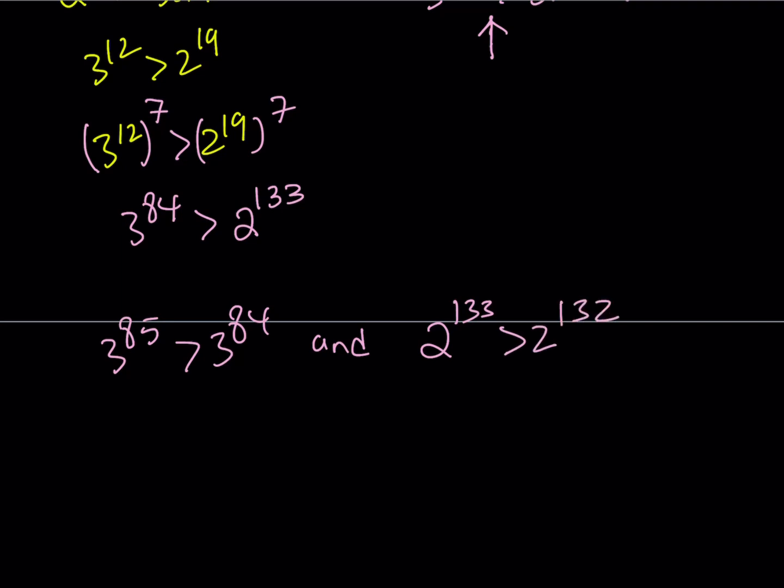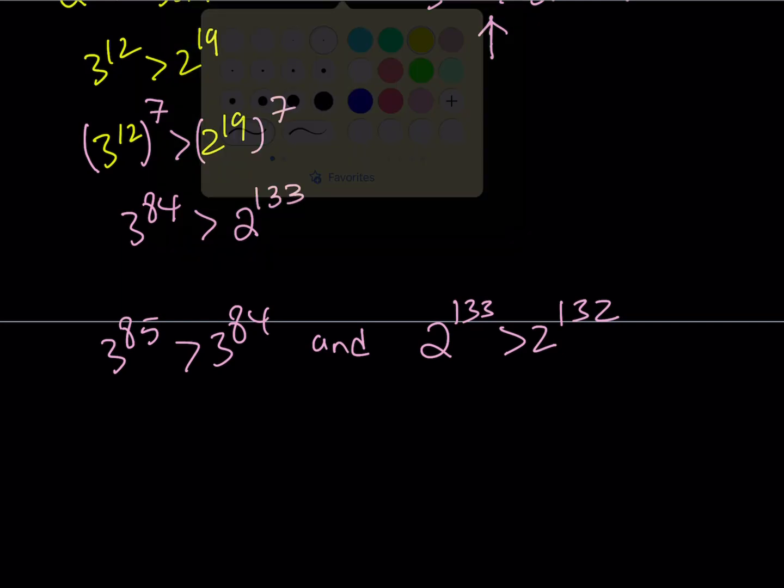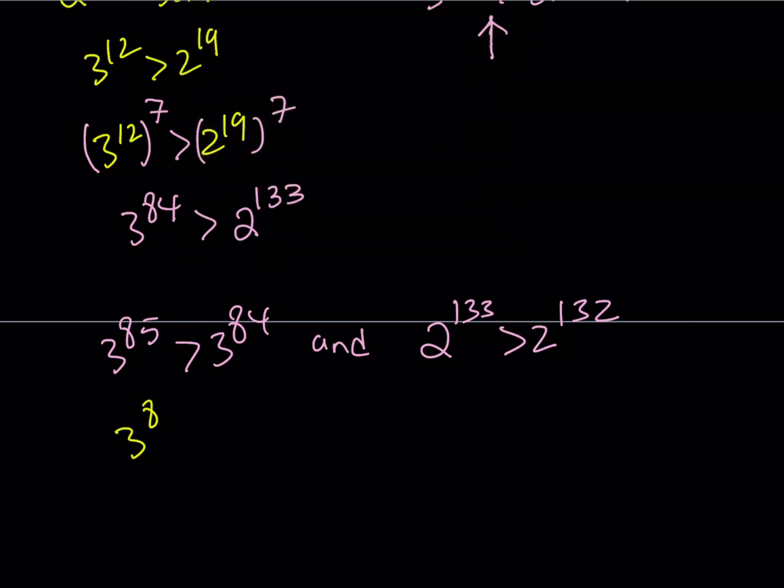If you put it all together, we get the following. This means 3 to the power 85 is greater than 3 to the power 84 which is greater than 2 to the power 133, which is greater than 2 to the power 132.